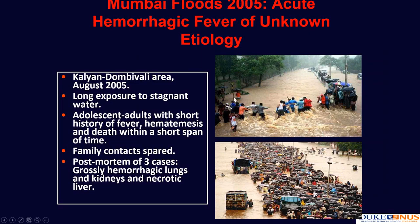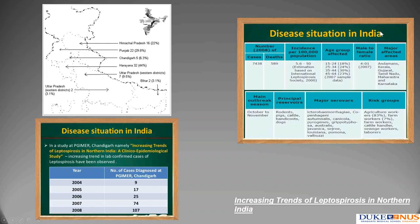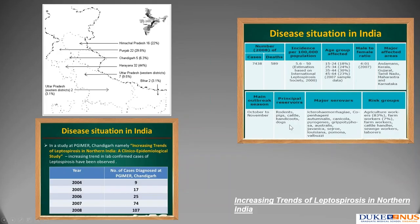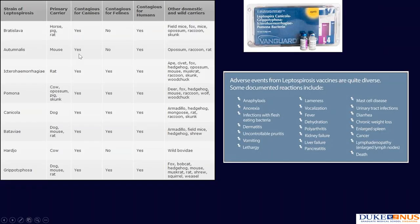During the Bombay floods, I was called by Dr. Deshmukh. I am only showing cases where I was involved in finding a solution. We found that of 12 deaths, 3 were caused by Leptospirosis infection. There are major reservoirs in animals, and essentially the rat is the main one. It causes a huge range of symptoms from anaphylaxis to kidney disease, conjunctivitis, and fever.